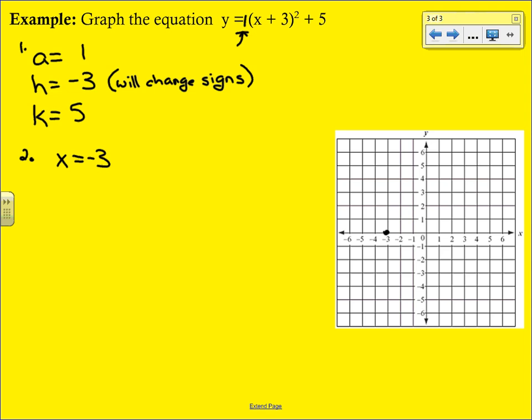The next step is to identify the vertex, and the vertex is going to be (h, k), so that's (-3, 5). Just kind of ignore that first initial dot there. So it's (-3, 5), and that's going to be our vertex.